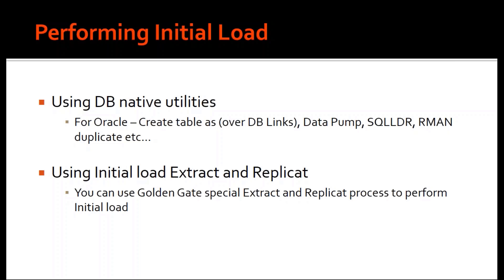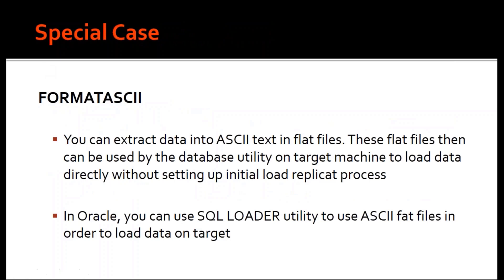Initial load can only be performed using database native utilities when the source and target are of the same vendor. But what if the source and target are of different vendors? Then you need to use the initial load extract and replicate provided by Golden Gate — these are known as special extracts, or initial load extract and replicate processes.